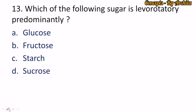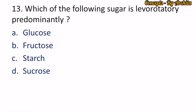Question 13: Which of the following sugar is levorotatory predominantly? The options are glucose, fructose, starch, and sucrose. Glucose is dextrorotatory. Sucrose is also dextrorotatory before hydrolysis. Predominantly, fructose is levorotatory in nature. So the correct option is option B, fructose.